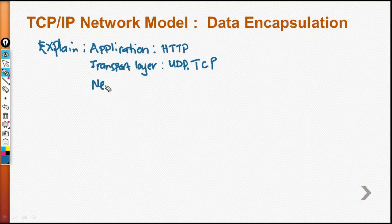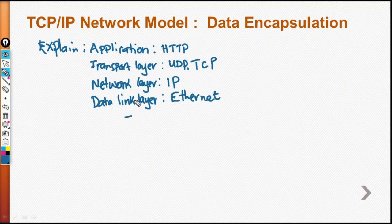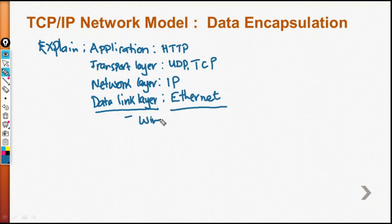From there we went to the network layer and talked about the Internet Protocol, then the data link layer and we talked about Ethernet. What you need to know about these layers is that there are a lot of protocols related to Ethernet and wireless networks, or wireless local area networks.